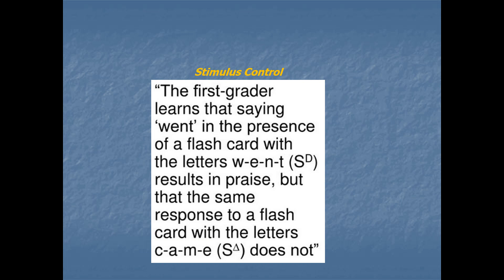A first grader learns that saying 'went' in the presence of a flashcard with letters W, E, N, T results in praise. But the same response to a flashcard with the letters C, A, M, E does not get praise. In other words, the kid is learning to discriminate between those sets of letters and to have different behavior for each of them. That's part of learning language - that learning discrimination.